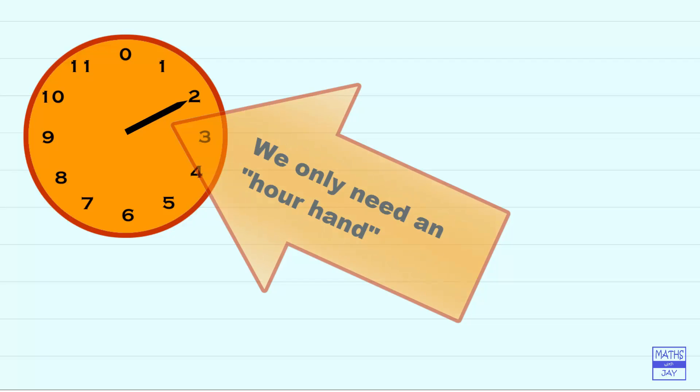But in Modular Arithmetic we only need to concern ourselves with whole numbers, so we only need the equivalent of an hour hand. So no need for a minute hand and we certainly don't need a second hand. So we're only going to be interested in the hour hand pointing directly at a number.